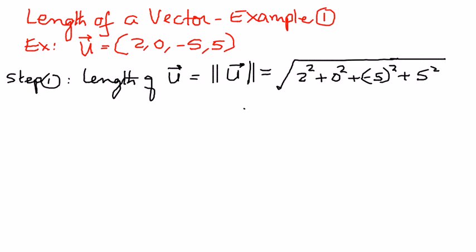When we simplify this, this is going to be 2 squared is 4, 0 squared is 0, plus negative 5 squared is negative 5 times negative 5, which is positive 25, plus 5 squared is 25.